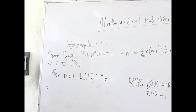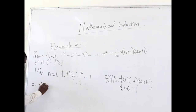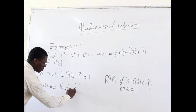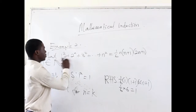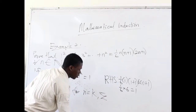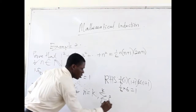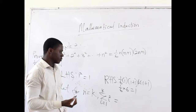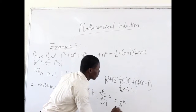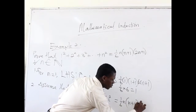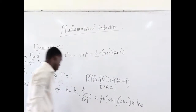Let's look at the second step, which is the assumption step, or the hypothesis step. We assume that for n equals k, where k is also an element of the set of natural numbers, the summation of i squared from i = 1 up to k equals (1/6) · k · (k+1) · (2k+1). We are assuming that this is true.